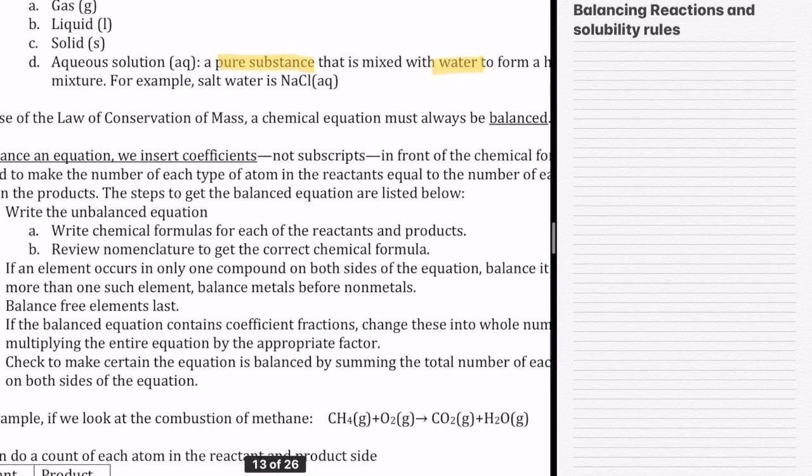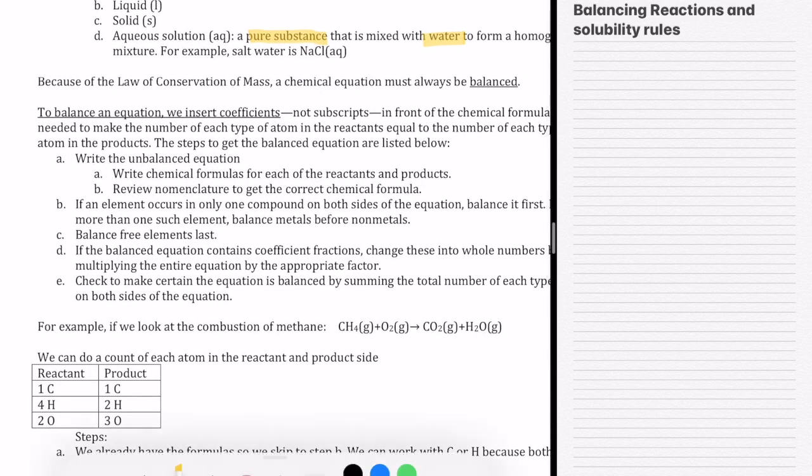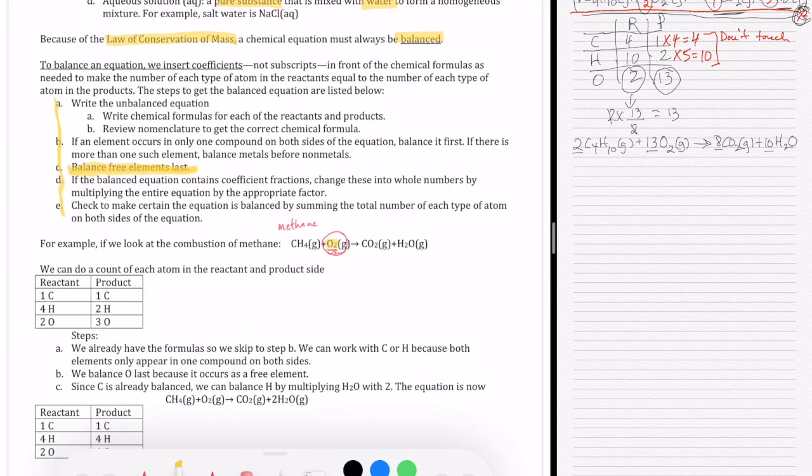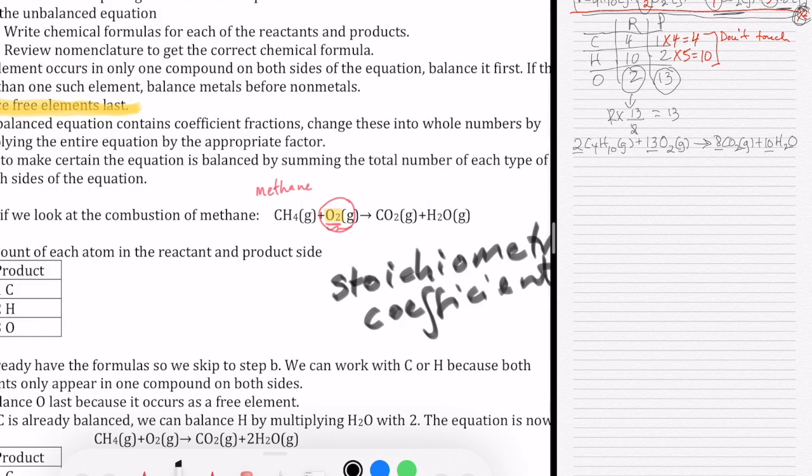Another important point is that a chemical equation always has to be balanced. This is because of the law of conservation of mass. The mass of the reactants equals the mass of the products. The atoms you have beforehand must still be present after the reaction. So we balance equations by inserting stoichiometric coefficients, numbers we put in front of compounds or elements.